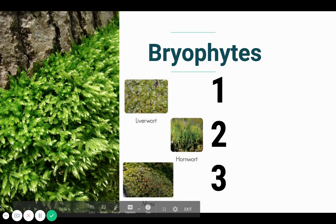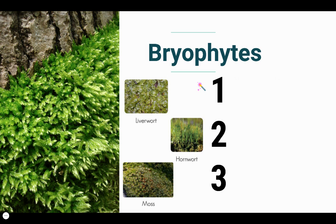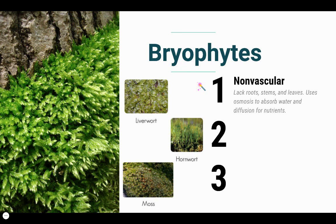The first group is the bryophytes. Bryophytes are non-vascular plants. That means they do not have roots, stems, or leaves. They use osmosis to absorb water, kind of like a sponge, and they use diffusion to transport nutrients into their cells.